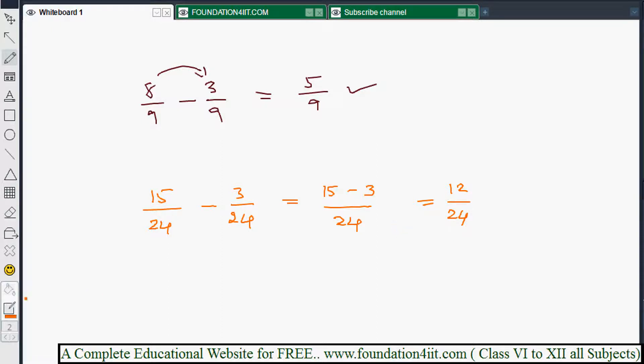12 by 24 - you can cancel this. 12 and 24 have a common factor. 12 into 1 is 12, and 12 into 2 is 24, so 1 by 2. We need to reduce or simplify to 1 by 2. Always write fractions in simplest form. This way we can do subtractions when denominators are the same.